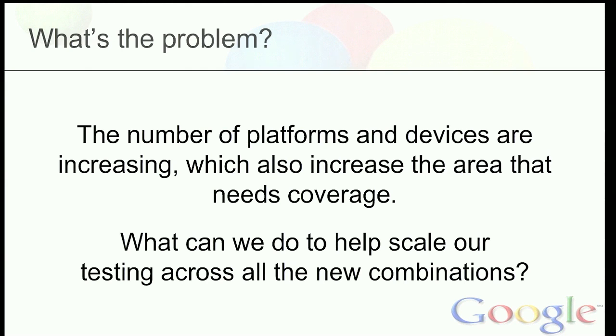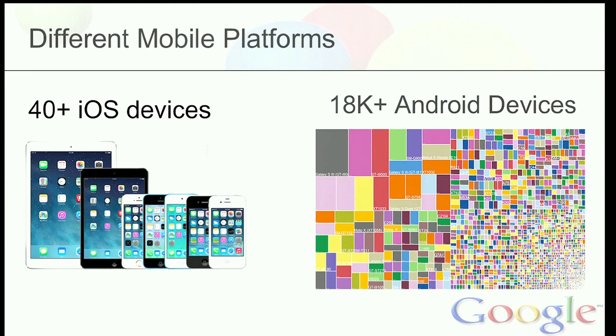So what are these combinations? There are more than 40 different configurations for iOS devices, and around 18,000 or so different Android devices. And there are some Windows phones in the wild, which we don't know how many there are. But we would like to test on all these different devices, and that's the motivation.